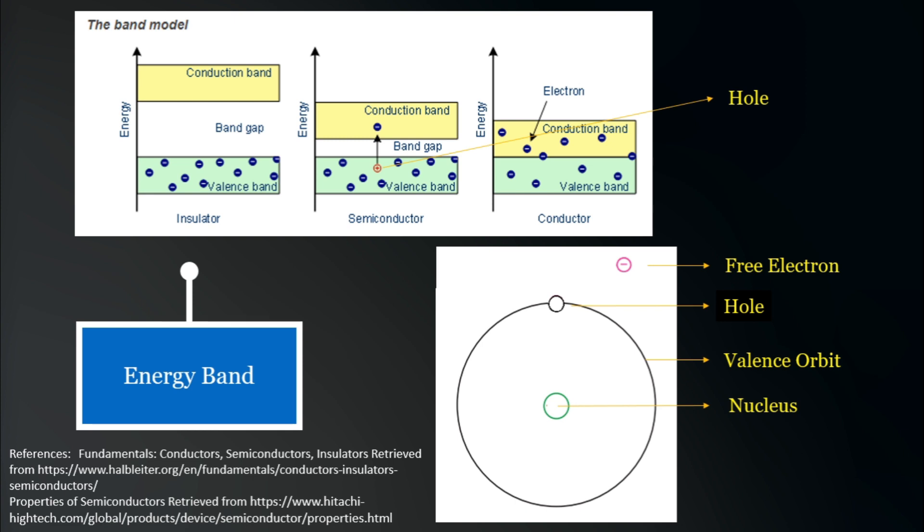For now, remember that holes are positively charged and the free electron being an electron is negatively charged. We will be using this later. At absolute zero temperature, all valence electrons are on the valence band, resulting to no free electron in the conduction band. Thus, semiconductors act as insulators at this temperature.